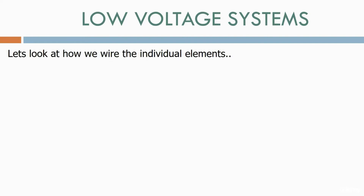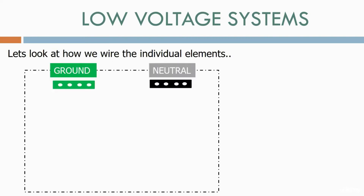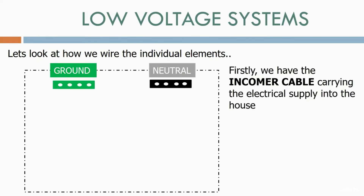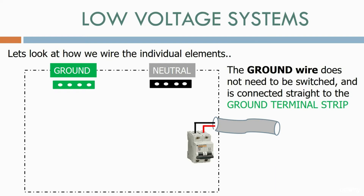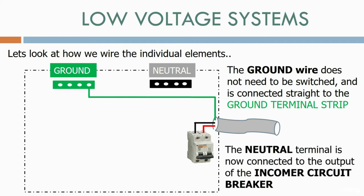Let's look at how we wire the individual elements. Firstly, we have the incomer cable carrying the electrical supply into the house. This connects to the incomer circuit breaker, which switches both the live and neutral wires. The ground wire does not need to be switched and is connected straight to the ground terminal strip. The neutral terminal is then connected to the output of the incomer circuit breaker.